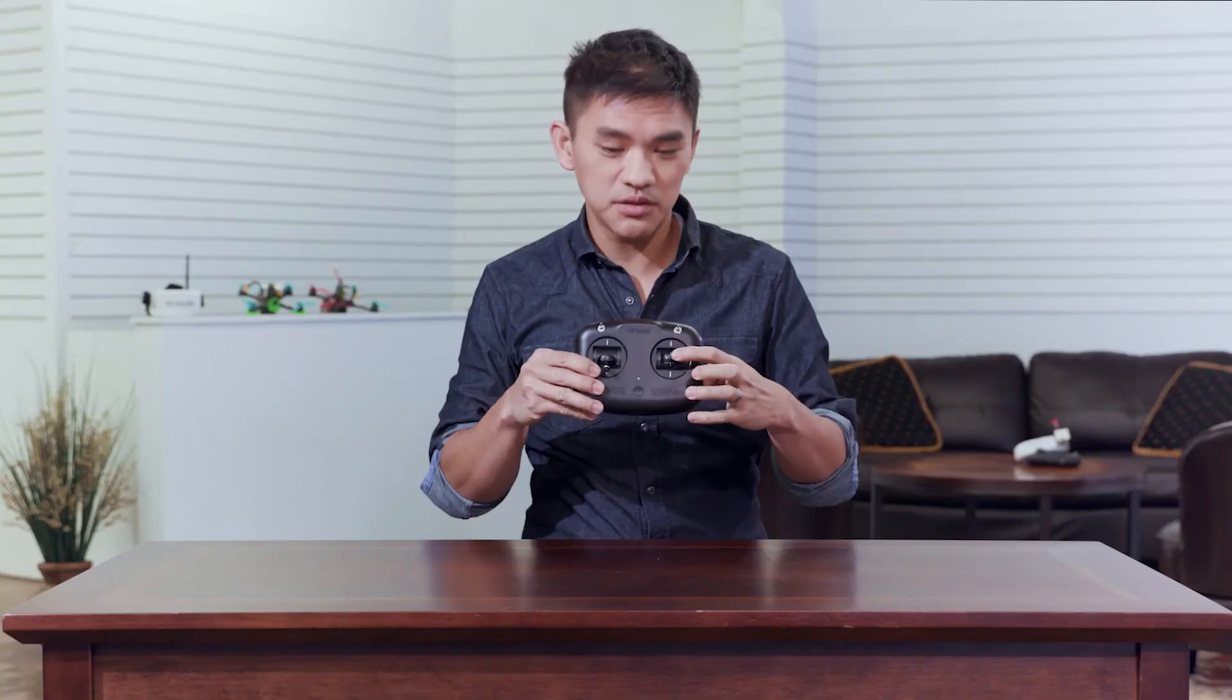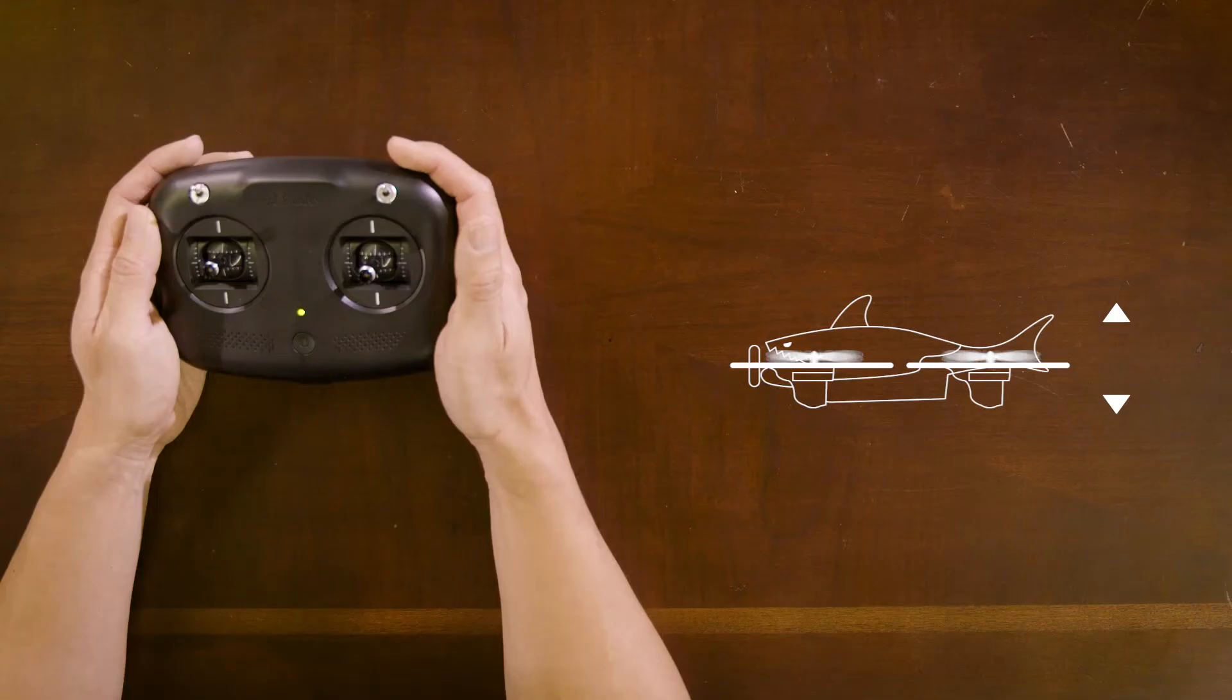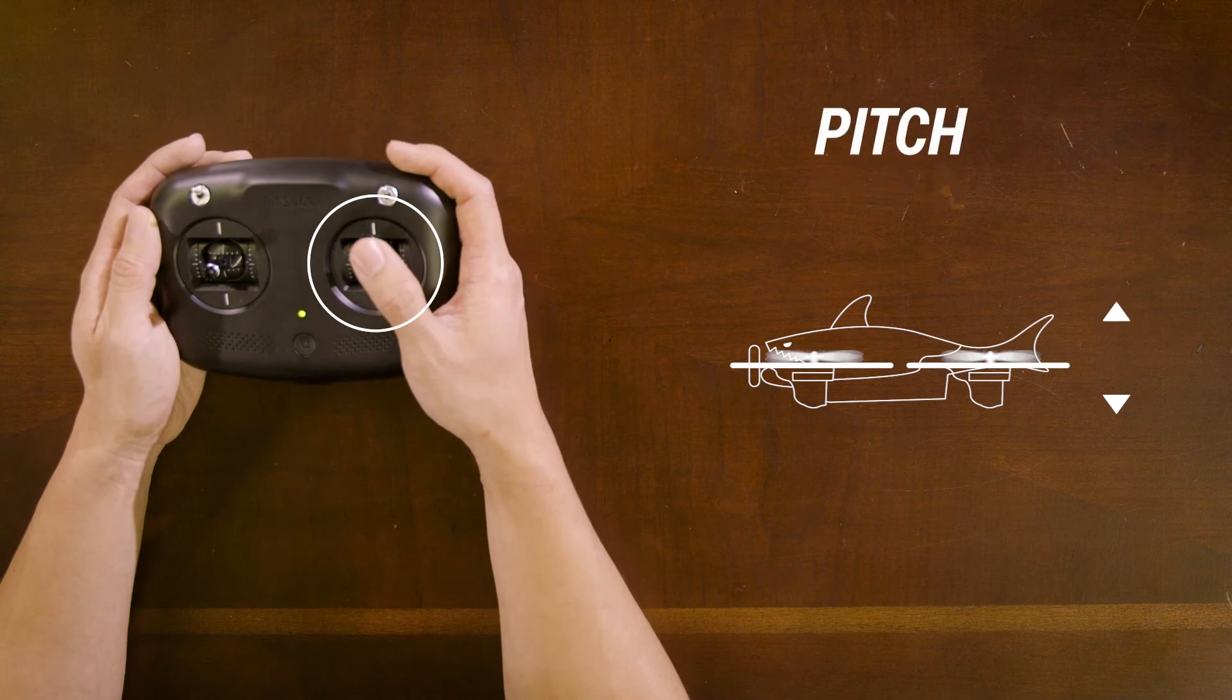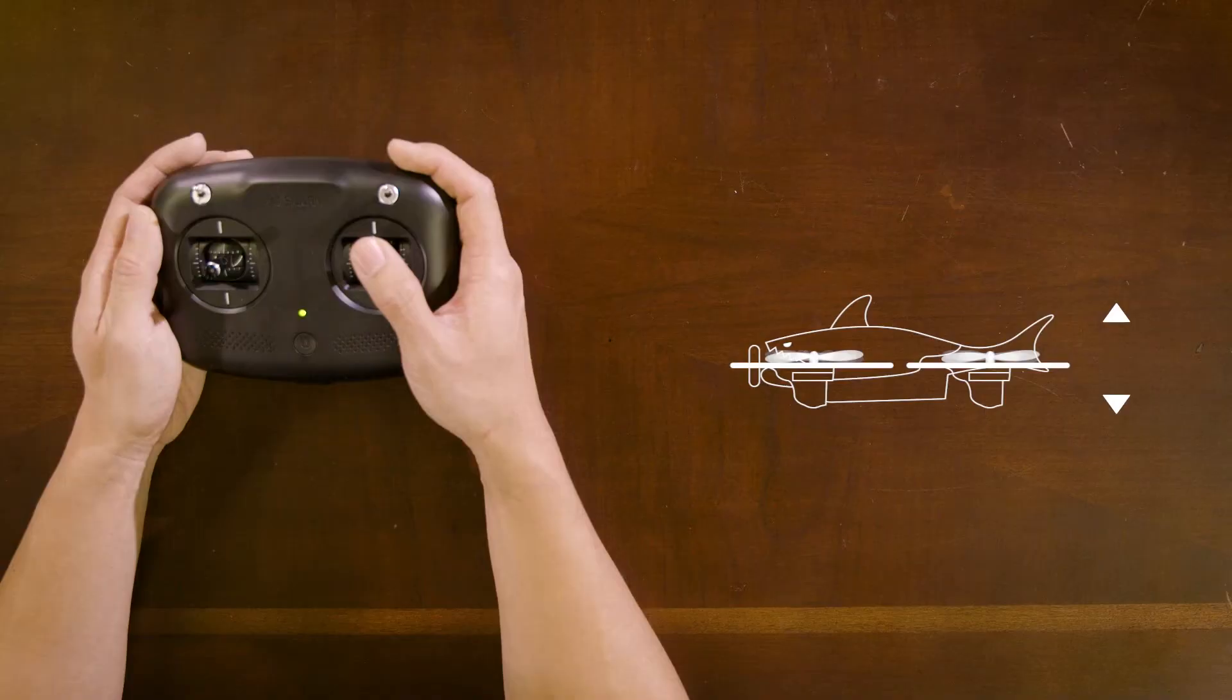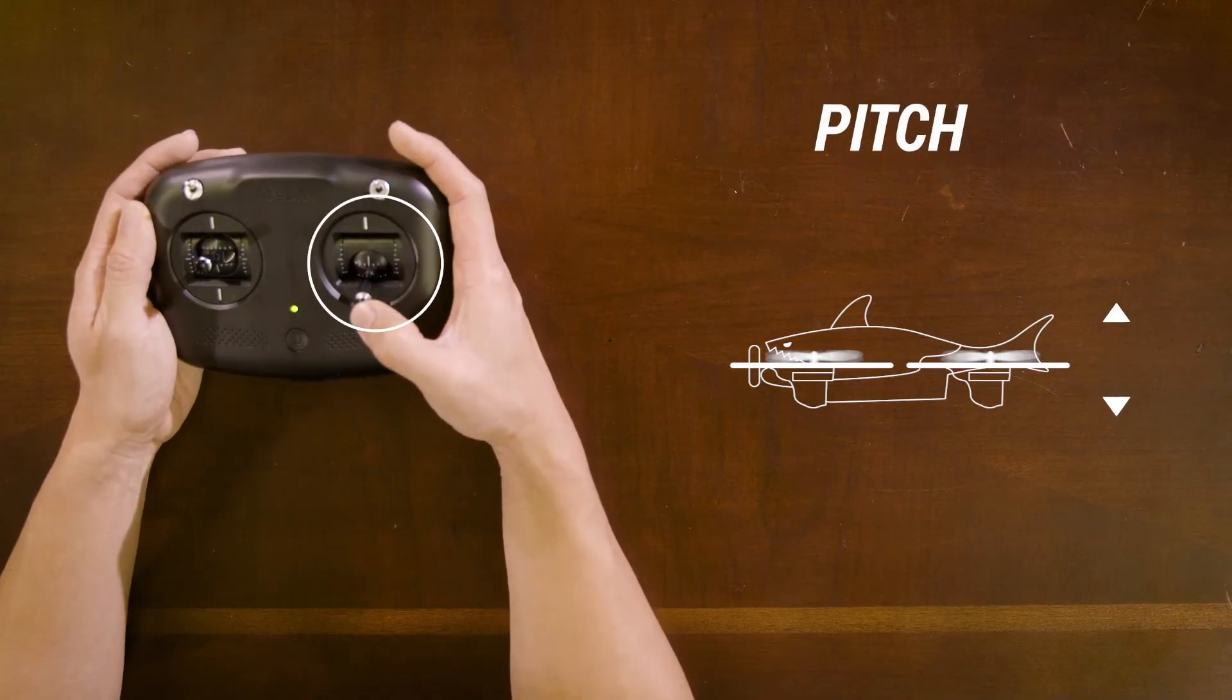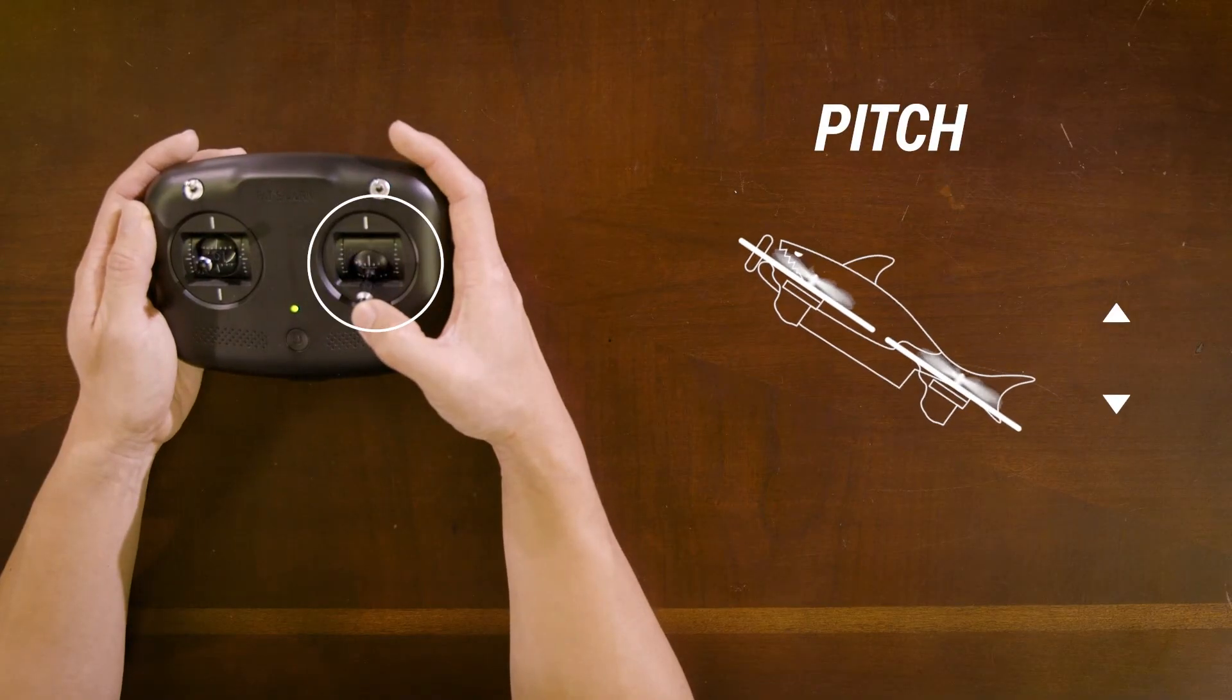Pushing up and down on the stick will control pitch. Pushing up will actually pitch the nose down, make you fly forward. Pushing down on the stick will make the drone pitch backwards and fly back.